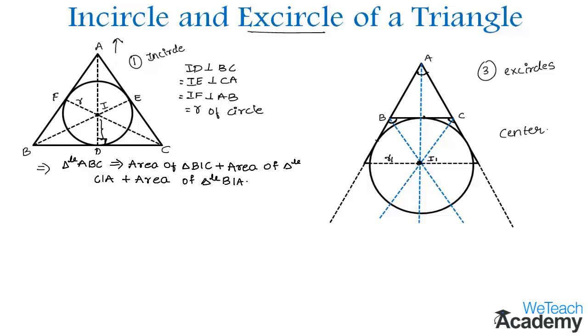That implies we get ½ × base BC × height ID, plus ½ × CA × IE for triangle CIA, plus ½ × AB × IF for triangle AIB.